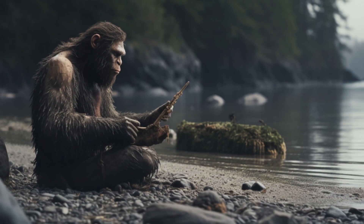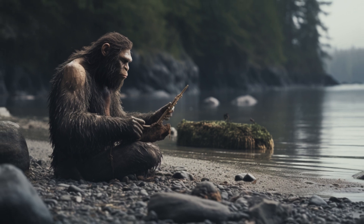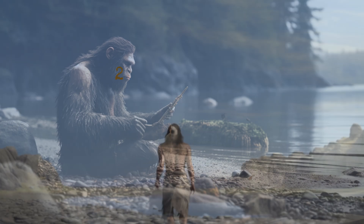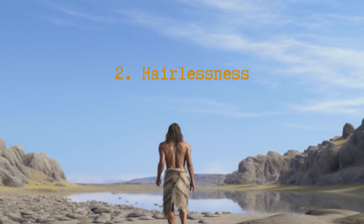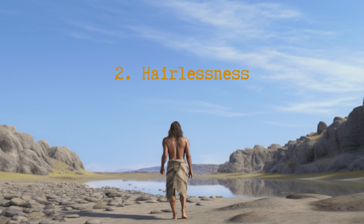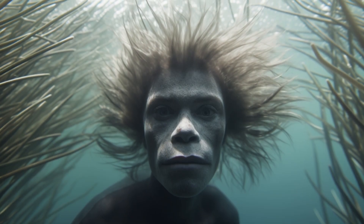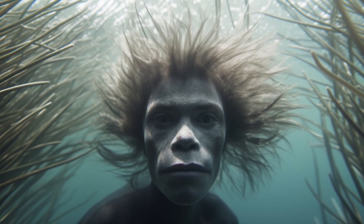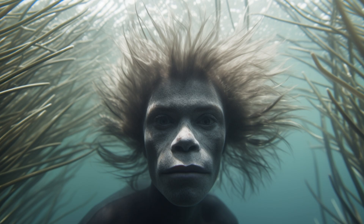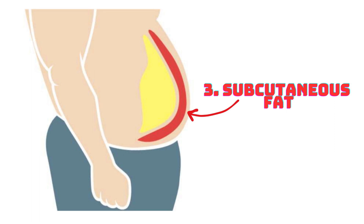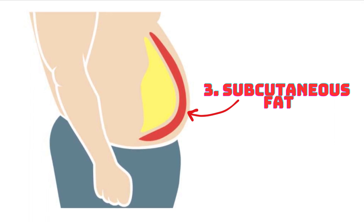Proponents of the aquatic ape theory point to several other potential aquatic adaptations in humans. Hairlessness: unlike most primates, humans are virtually hairless, thought to be an adaptation for better thermoregulation while in water, as excessive hair could slow down swimming and create buoyancy issues. Subcutaneous fat: humans have a relatively thick layer of subcutaneous fat, which can aid in buoyancy and insulation in aquatic environments.